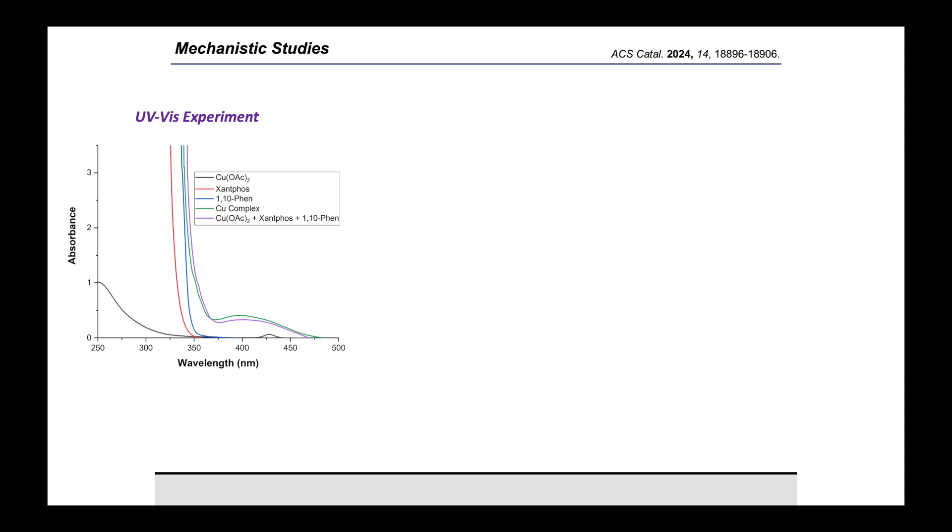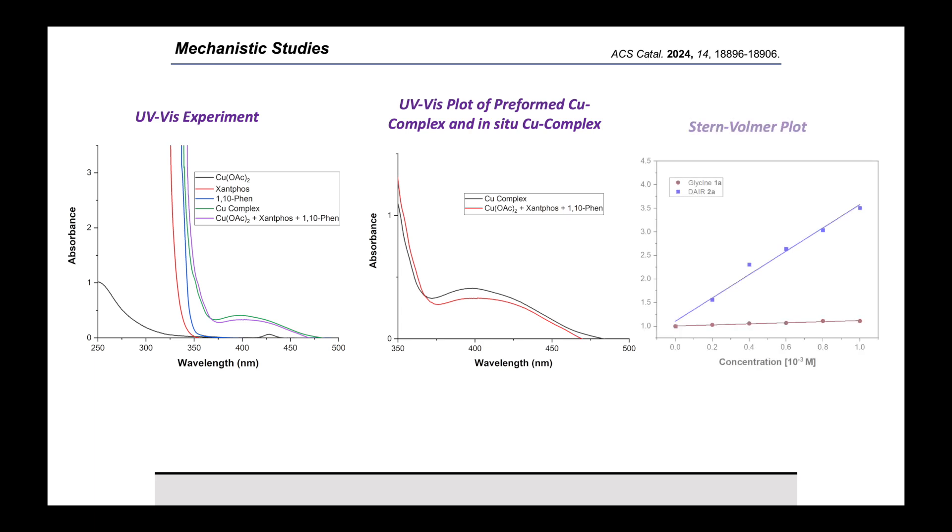From UV-visible absorption study, it was observed that by combining copper acetate, Xantphos, and phenanthroline, a strong band was observed in the visible region, which can absorb the visible light to carry out the reaction. The UV-visible absorption spectrum of preformed copper complex was found to be consistent with the in-situ generated copper complex. From the Stern-Volmer plot, it was confirmed that the excited state copper complex was quenched by diaryl iodonium reagent and the reaction was going by oxidative quenching pathway.